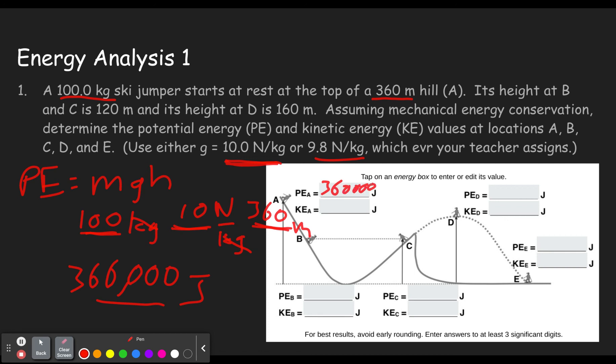Then the next key thing we see here is that it is starting at rest. That means its velocity is zero. So if we think about one half mv squared, if v is zero, KE is going to be zero.